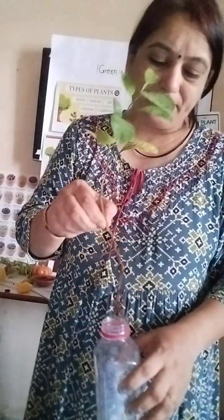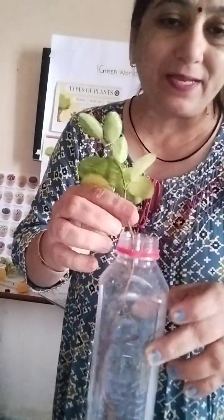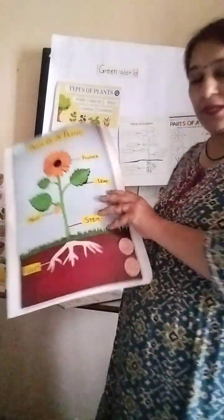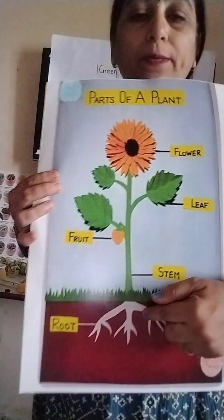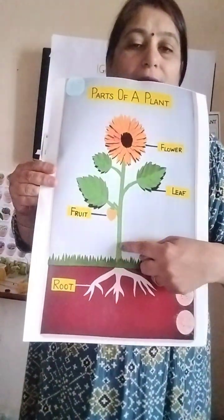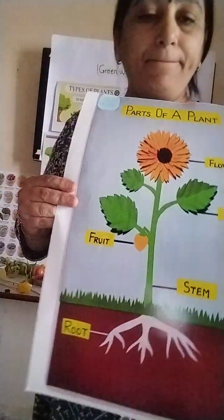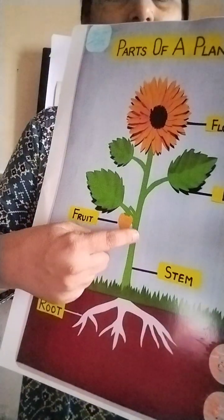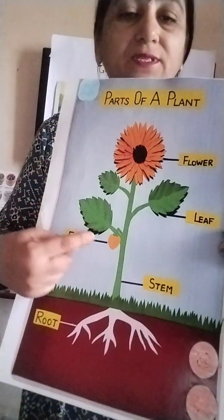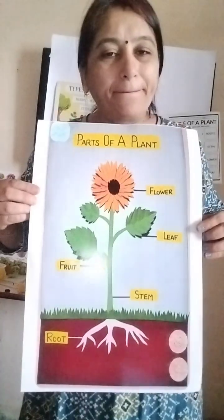These are the leaves - leaves prepare the food. They are called the kitchen of the plants. These are the roots, and then the stem and leaves. The roots hold the plant and grow underground. Then up comes the stem, and then the leaves, branches, flowers, and fruits. These are all parts of the plants.